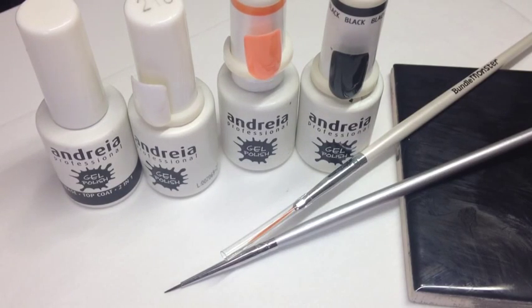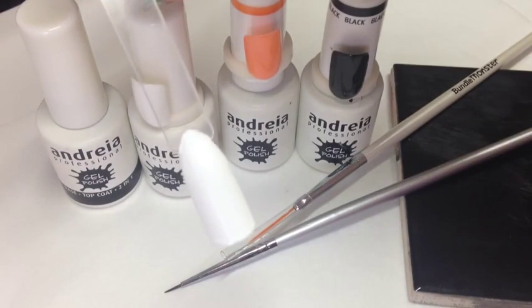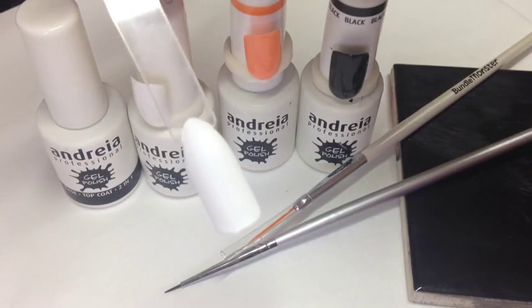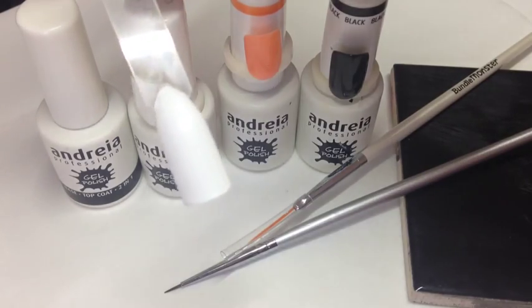I've already cured two coats of the white, so the next step is to decant some black polish onto my tile.